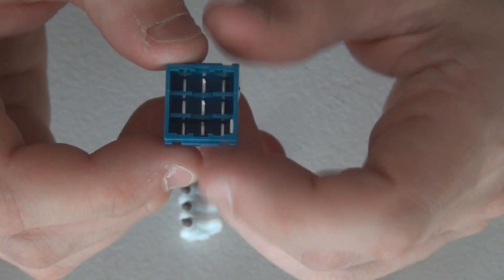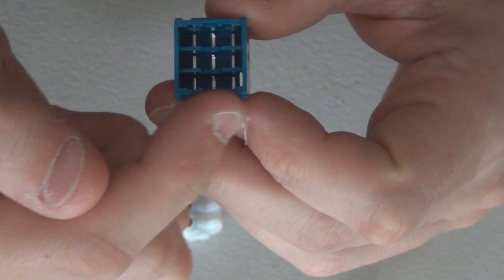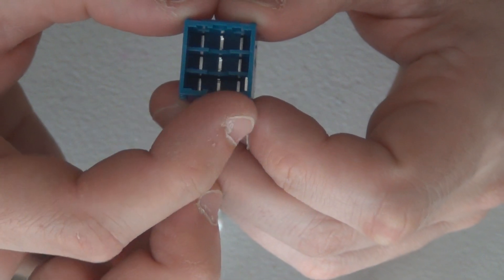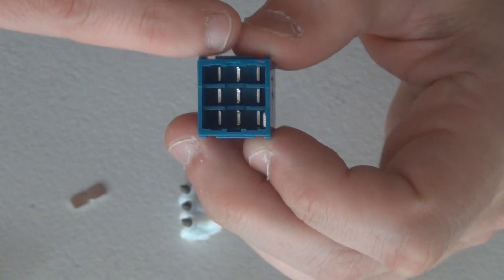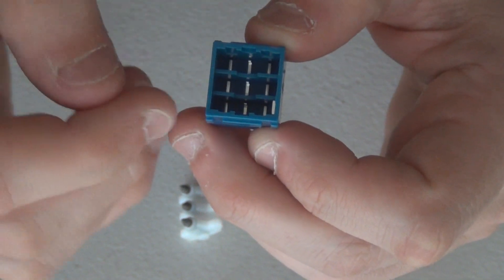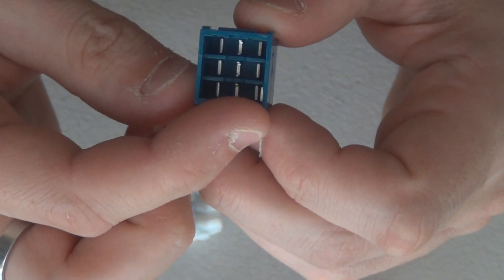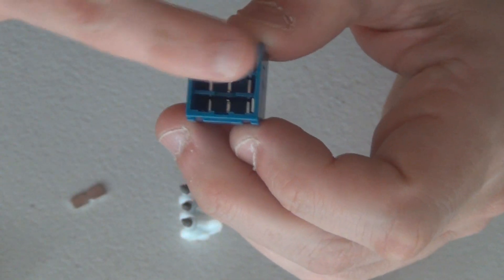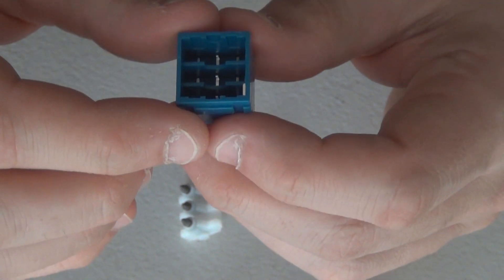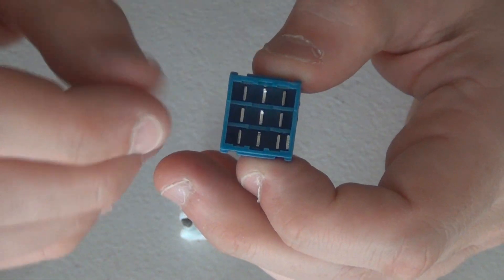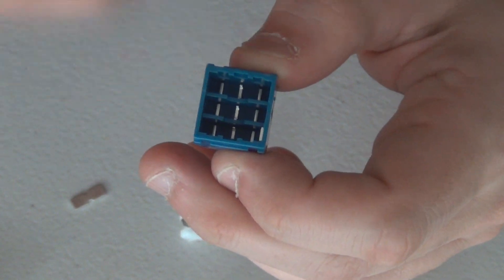So one other thing I should probably mention for people who aren't familiar with how switches work. A three pole double throw switch means you have three poles, that's why there's three sections to this, so it's basically like a single pole double throw switch, three of those in a row.